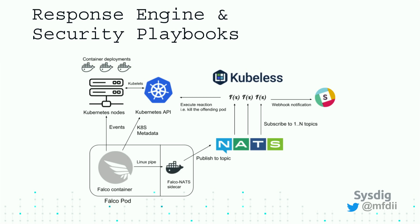The way it works is that Falco pulls data and events from the Kubernetes environment. We have a sidecar that Falco uses to push events into NATS. We implemented kubeless functions — kubeless is a functions-as-a-service or serverless framework — to subscribe to the messaging server and take action in the environment.